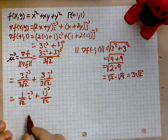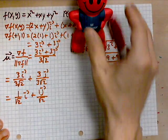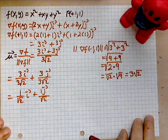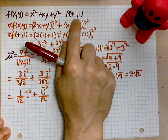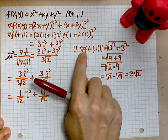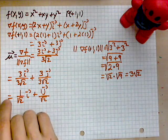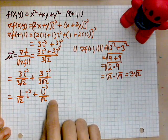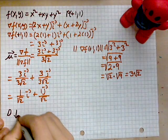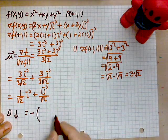The procedure is fairly mechanical: form the gradient, evaluate the gradient at the point, then divide the gradient by its magnitude — where the magnitude is found using the Pythagorean theorem. The direction of most rapid decrease is indicated by the negative of the unit vector, so multiply everything by negative one.